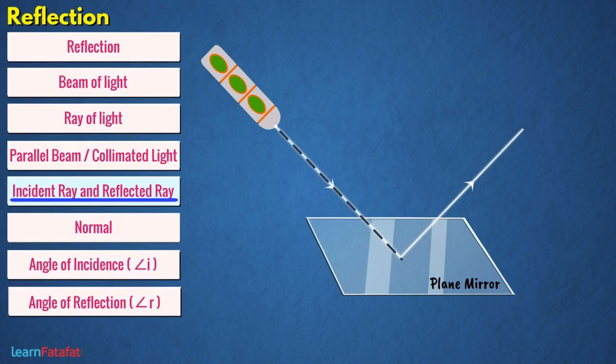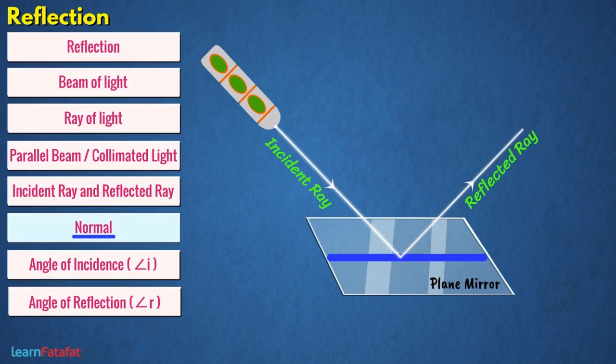The ray which strikes any surface is called the incident ray, and the ray that comes from the surface after reflection is called the reflected ray. Normal: if you draw lines showing the mirror, the incident ray, and the reflected ray